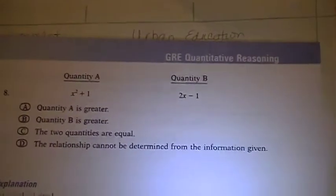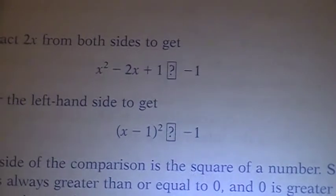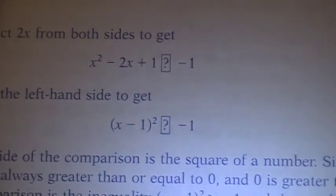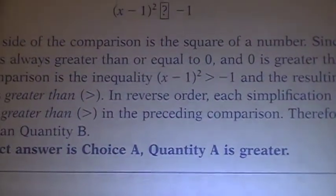This one is another algebra one. This one turns into something really interesting when you do the algebra. It comes out to, on one side, a perfect square. On the other side, it has a negative number. Well, a perfect square can only be 0 or positive, so that one comes out to an actual answer instead of C or D. It comes out to A, where A is greater.